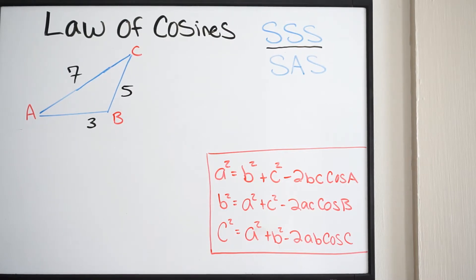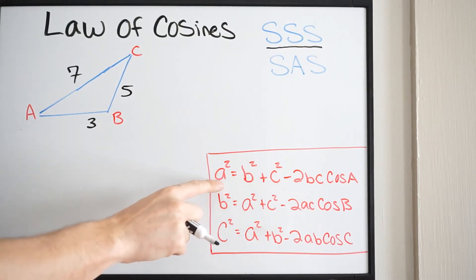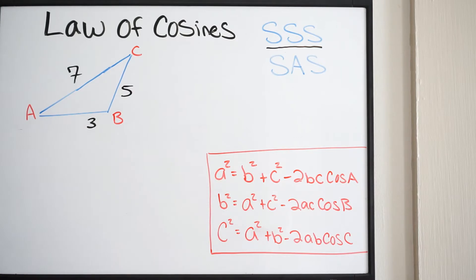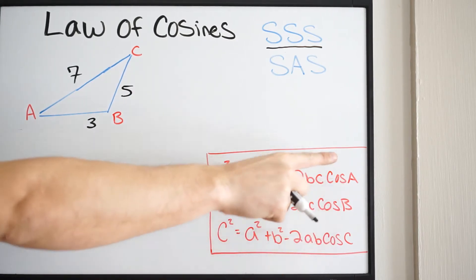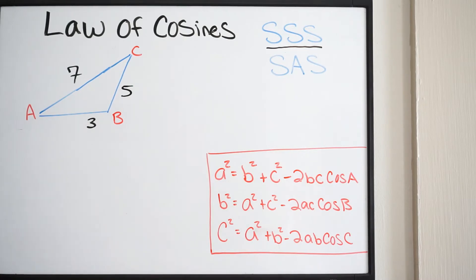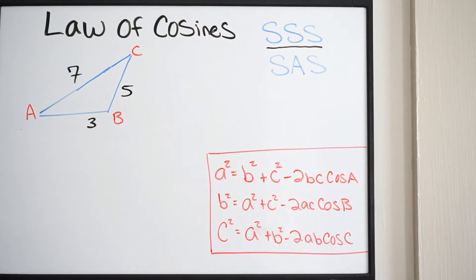Just going over it real quick, the lowercase letters — so in this case a, b, and c — those are talking about your sides, and the uppercase letters are talking about your angular value. So if we have a triangle that is side-side-side with no angles, we can go ahead and use the law of cosines to find the missing values.